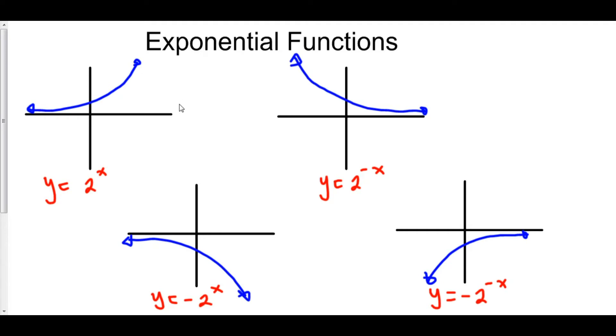Now, the four ways that our exponential function can be oriented is either positive and growing, positive and decaying. We call this exponential decay. It could be negative and growing, or negative and decaying.